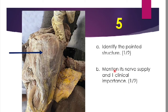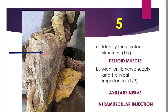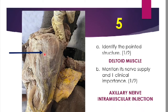The next question asks you to identify the pointed structure, mention its nerve supply, and one clinical importance. From its shape alone you can identify this as the deltoid muscle. Its nerve supply is the axillary nerve, and its clinical importance is that the deltoid is the site used for intramuscular injections.